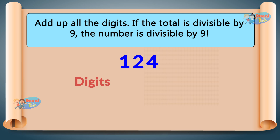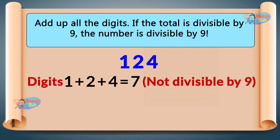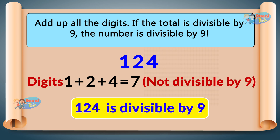124 — digits 1 plus 2 plus 4 equals 7. Since 7 is not divisible by 9, 124 is not divisible by 9.